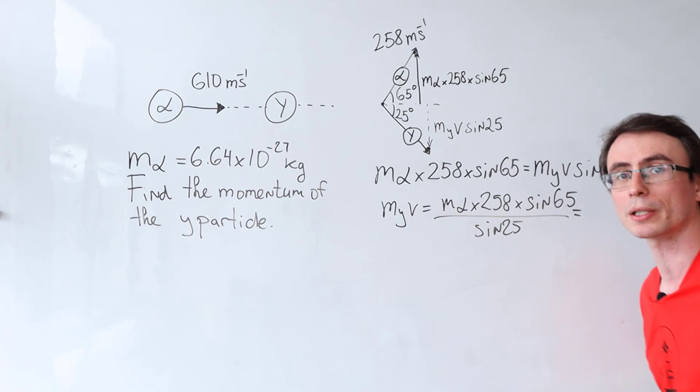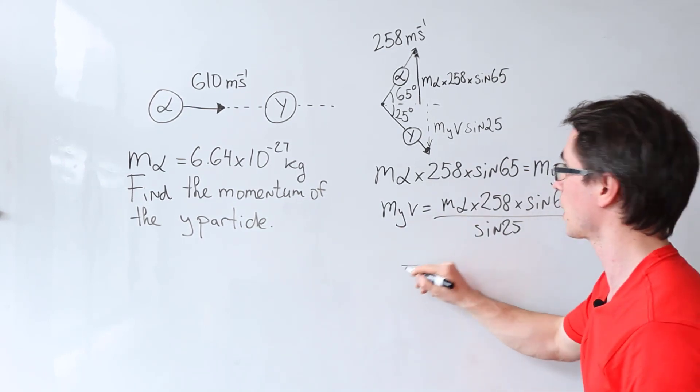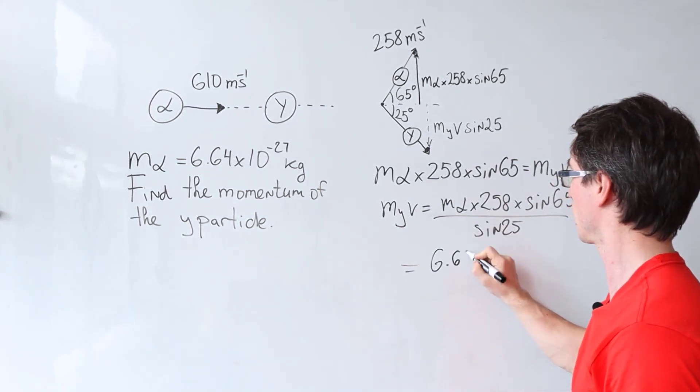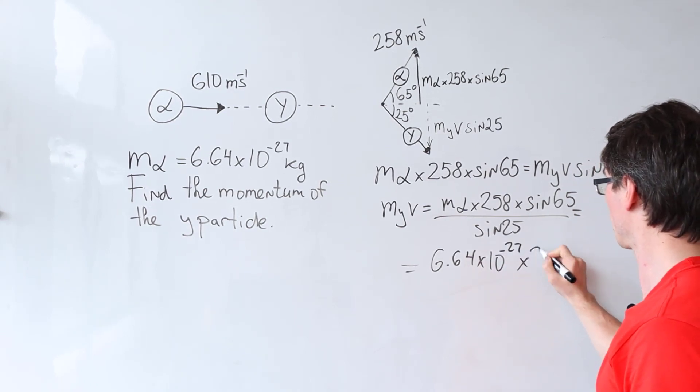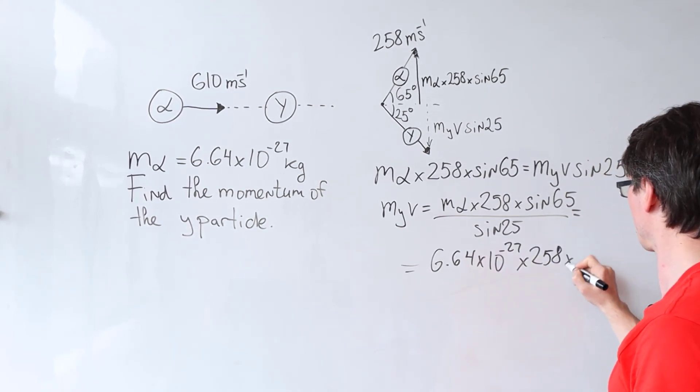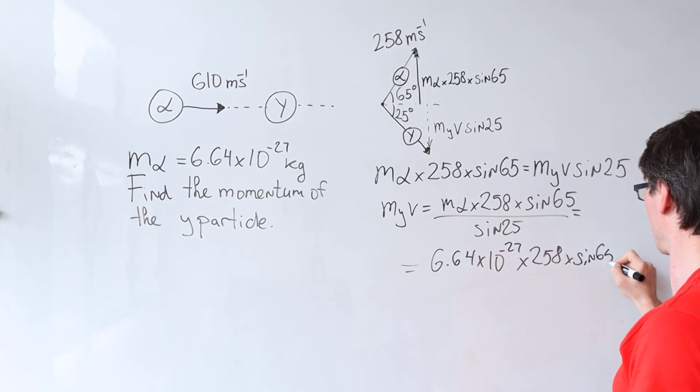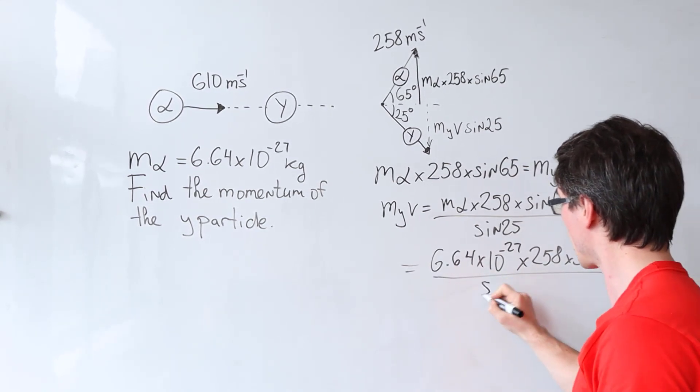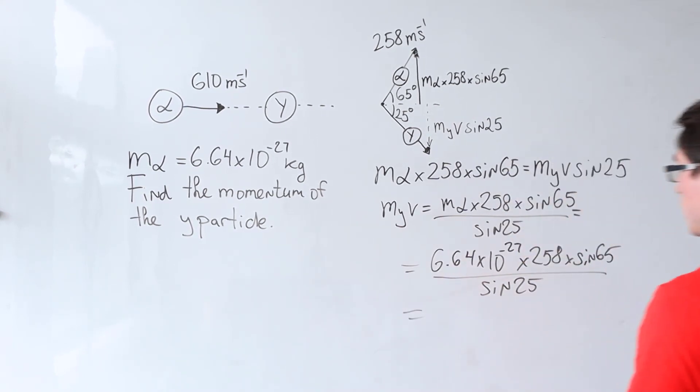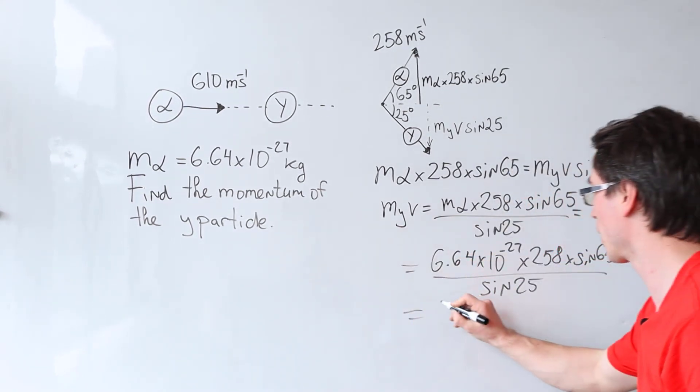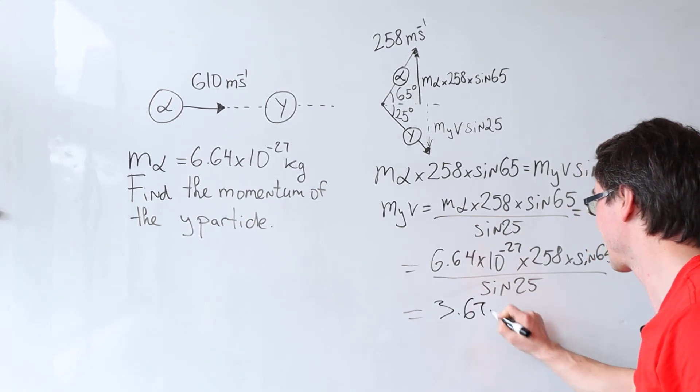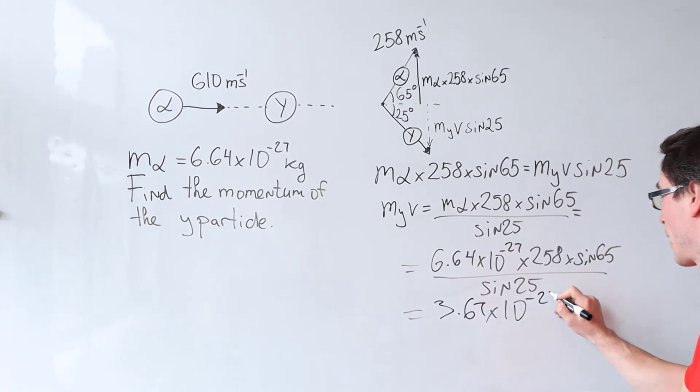Luckily we're given the mass of the alpha particle, also in your formula booklet if you're doing A-level physics. It'll be 6.64 times 10 to the power minus 27 times 258 times sine of 65 divided by the sine of 25 degrees. And if we put this into our trusty calculator, we are going to get 3.67 times 10 to the power of minus 24 kilograms meters per second.